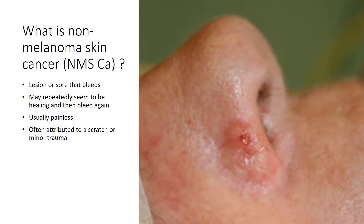Non-melanoma skin cancers often present as lesions or sores that bleed. They may repeatedly seem to be healing and then start to bleed again. That cycle of almost healing can lead to delayed presentation the first time you have one of these lesions. They are usually painless and people will often attribute them to a trauma or a scratch such as a shaving cut. This individual has a basal cell carcinoma starting around the base of the nose. The nose is the most common place to have a non-melanoma skin cancer.